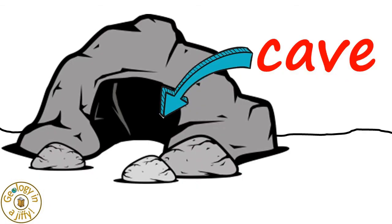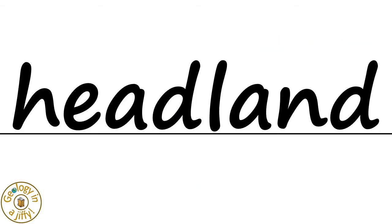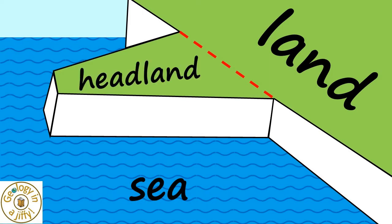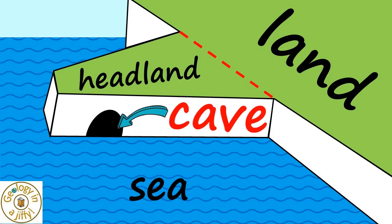Arches form after a cave is formed in a headland. Imagine a coast where the sea meets the land. The area seaward of the red line sticks out into the sea — this is the headland. Within this headland is where we often get caves forming.